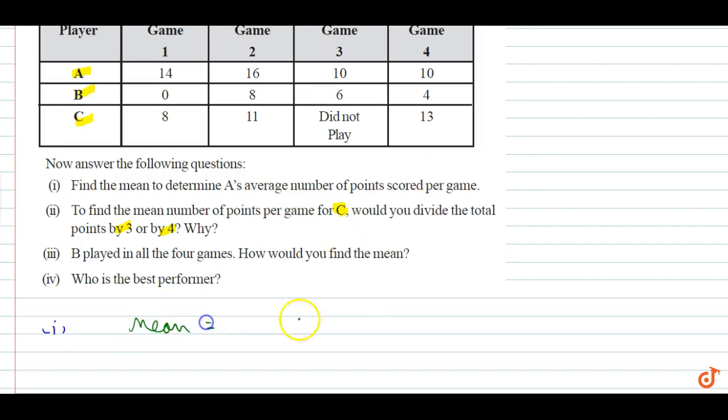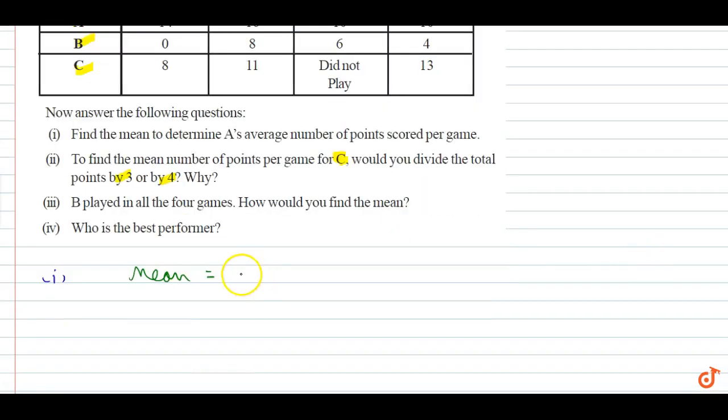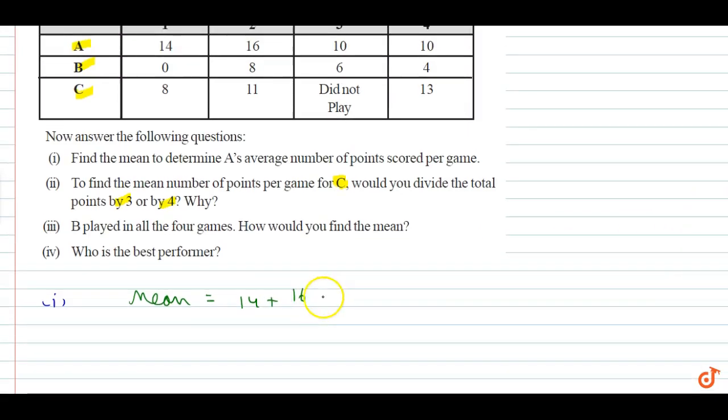So mean will be A scored how much in each game? 14 plus 16 plus 10 plus 10, and number of games is 4. So what is it? 50 by 4, and 12.5 points is the average or mean for A.